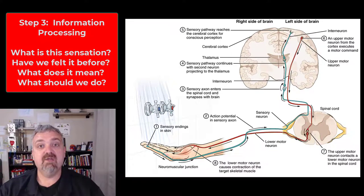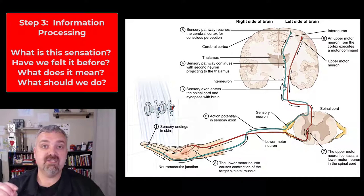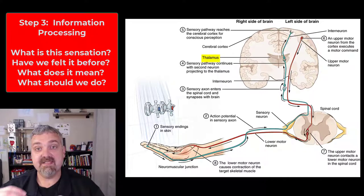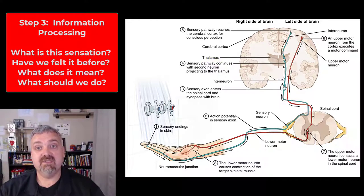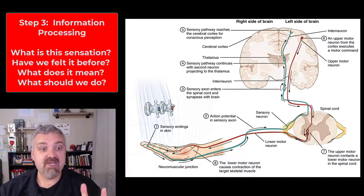But either way we're now consciously aware of what's going on which means this information has traveled up those sensory nerves to our filter, the thalamus. The thalamus has passed this information on to the primary sensory cortex which is the post central gyrus of the parietal lobe and the sensory association areas.